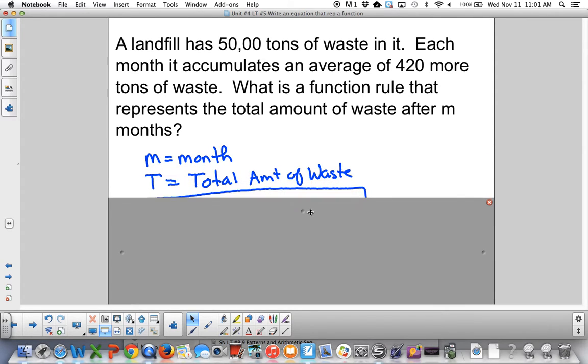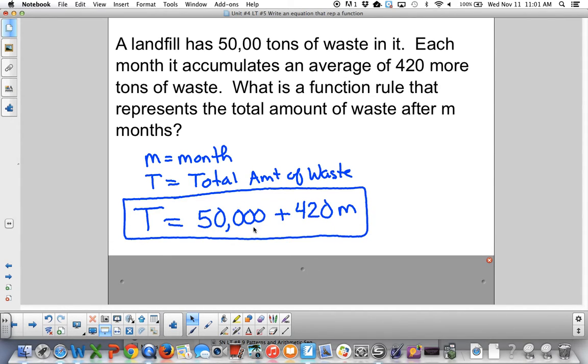If I let M equal the number of months and T the total amount of waste, we have a relationship that we know that we started with 50,000. But then in addition, we have 420, not thousand, tons, 50,000 tons. We're including 420 tons more each month. That's a lot of waste. So this would be our equation where M would be the months, number of months, and T is the total amount of waste, and we would have in tons.